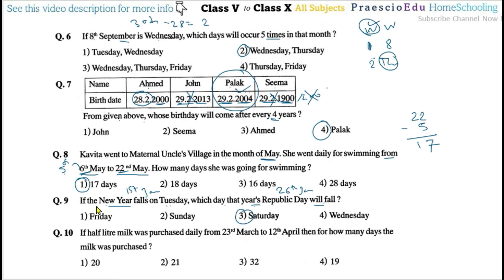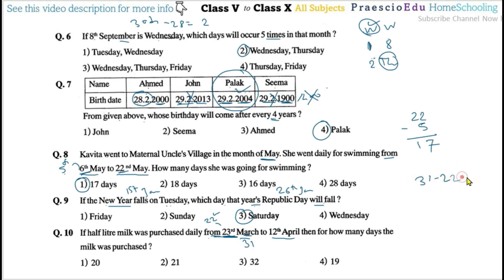Question number ten: If half-litre milk was purchased daily from 23rd March to 12th April, how many days was the milk purchased? Starting from 23rd March (previous day 22nd): 31 minus 22 equals 9 days in March. Plus 12 days in April gives 9 plus 12 equals 21 days. Option number two is correct.